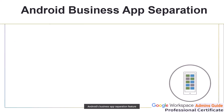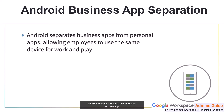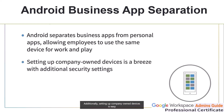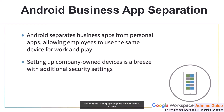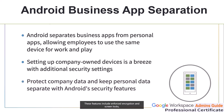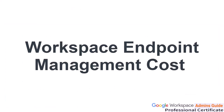Android's business app separation feature allows employees to keep their work and personal apps separate on the same device without sacrificing any convenience. Additionally, setting up company-owned devices is easy thanks to Android's additional security settings. These features include enforced encryption and screen locks, as well as the ability to remotely wipe a device in the event that it is lost or stolen.